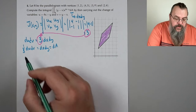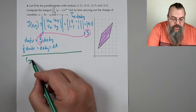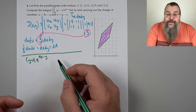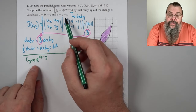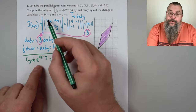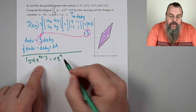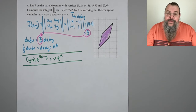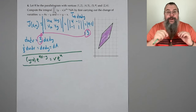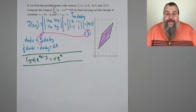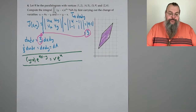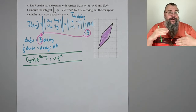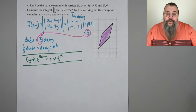Now for the function: y minus x is v, and 4x minus y is u. So the integrand becomes v times e^u — very clean. For the bounds, we look at the bounding curves of the parallelogram. The lines y = x + 1 and y = x + 4 give v = 1 and v = 4. The lines y = 4x − 2 and y = 4x − 11 rearrange to u = 2 and u = 11.